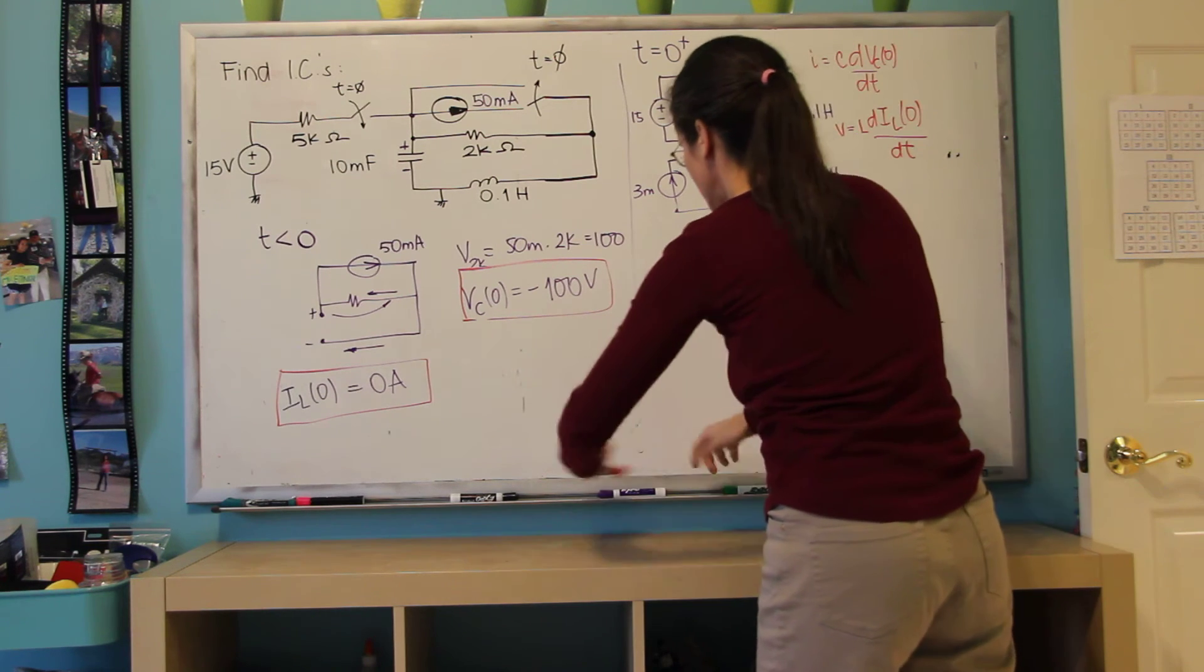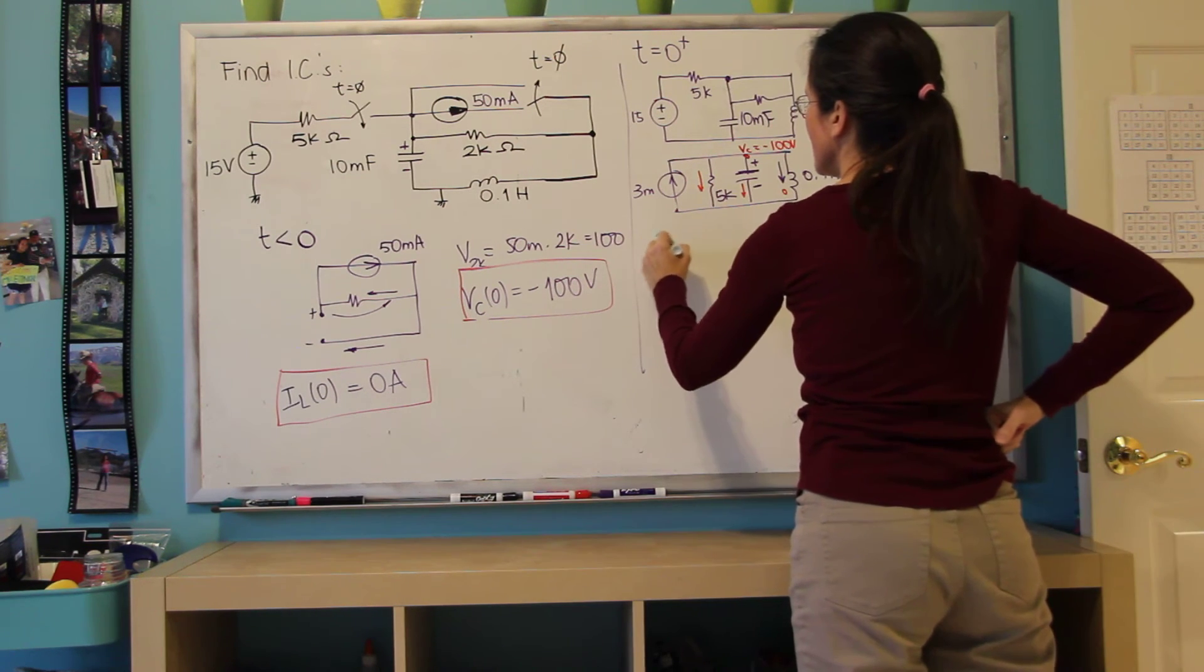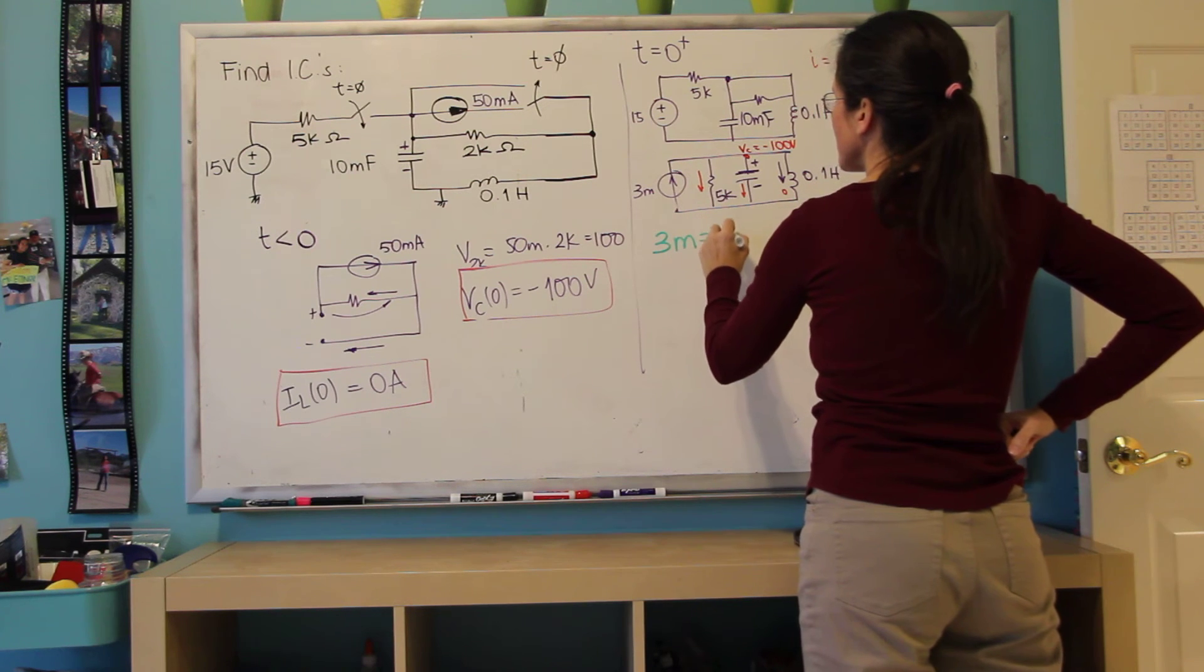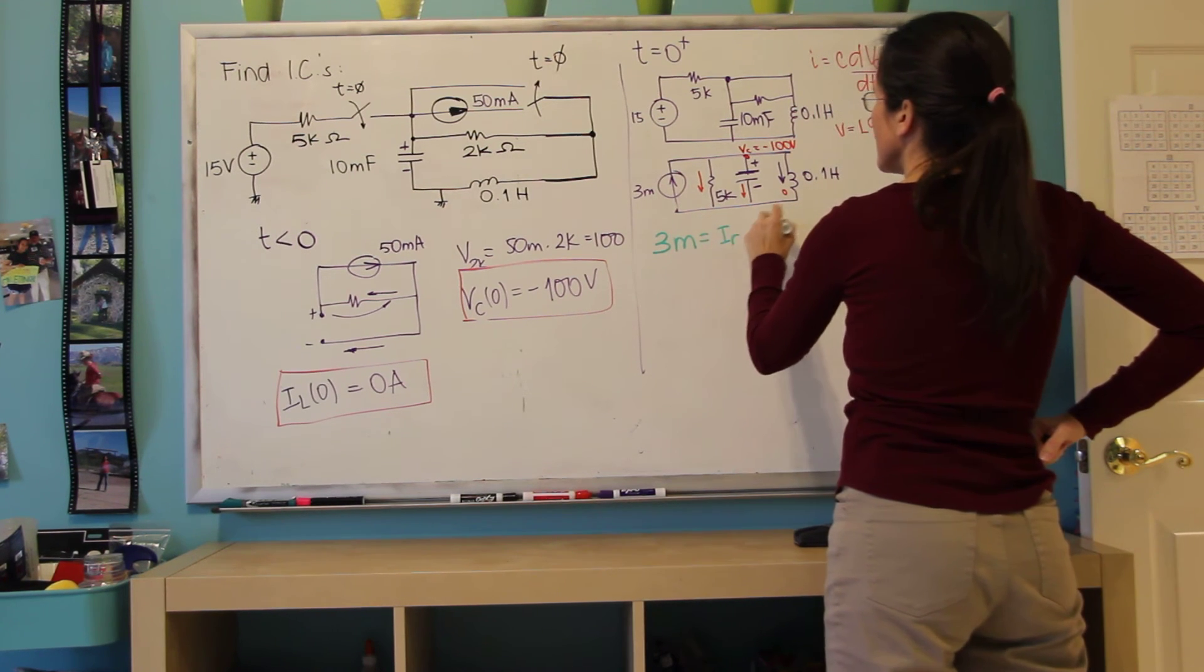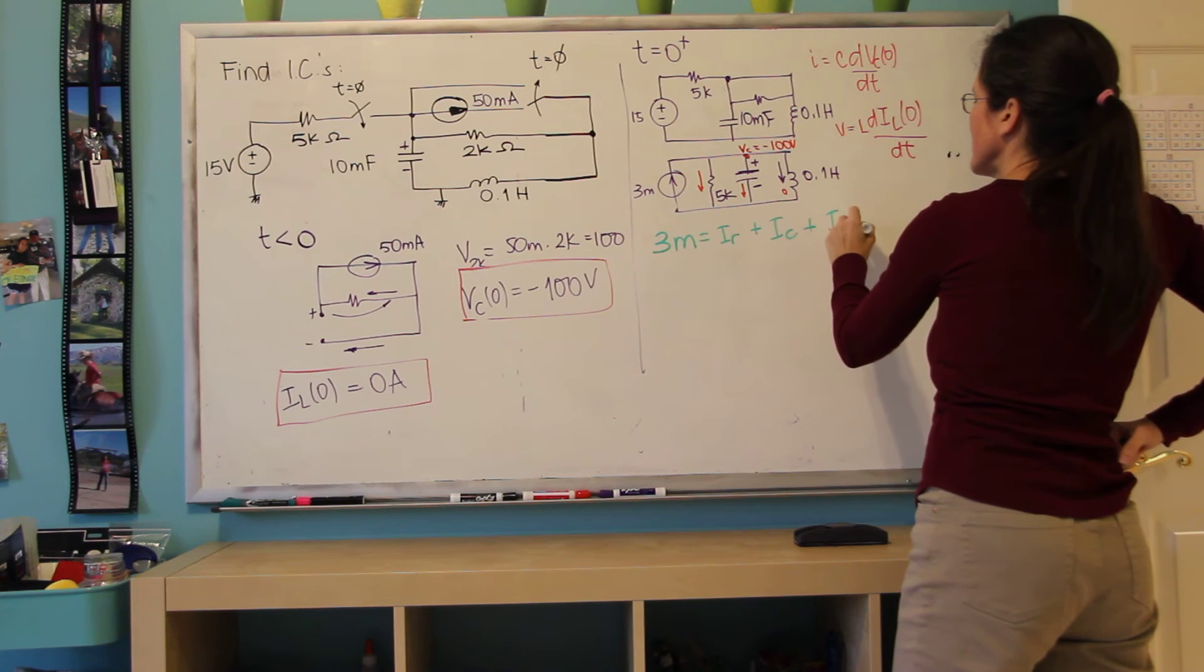So this current here is C dv/dt. And I can write a KCL. Let me write with another color here. Hopefully this green works. 3 milli equals IR plus I through the capacitor plus I through the inductor.